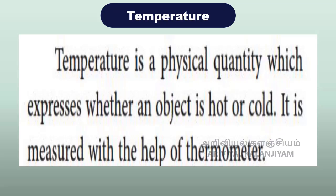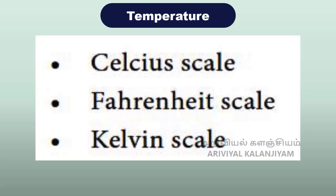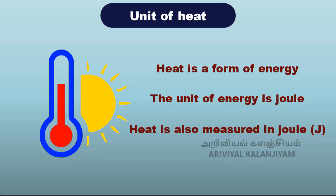Temperature is a physical quantity which expresses whether an object is hot or cold. It is measured with the help of a thermometer. There are three scales to measure temperature: Celsius scale, Fahrenheit scale, and Kelvin scale. Among these three scales, Kelvin scale is the most commonly used one. Unit of heat: We know that heat is a form of energy. The unit of energy in the SI system is Joule, so heat is also measured in Joule, expressed by the symbol J.